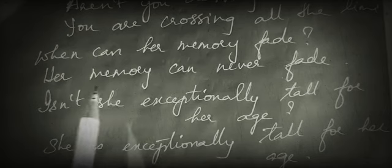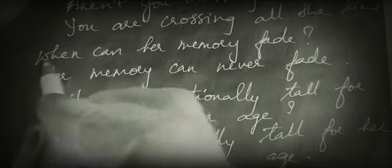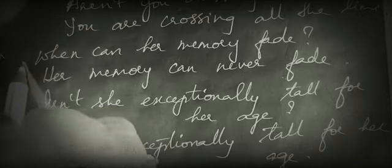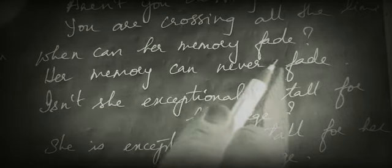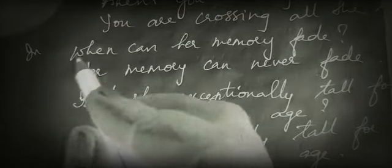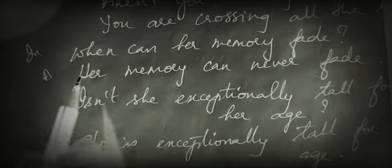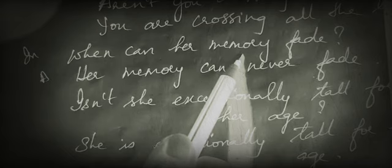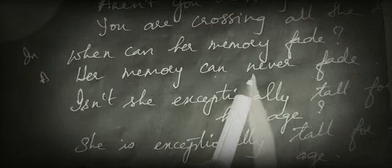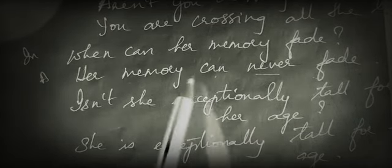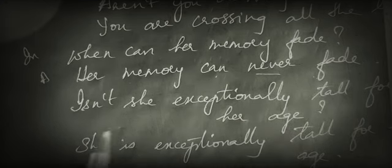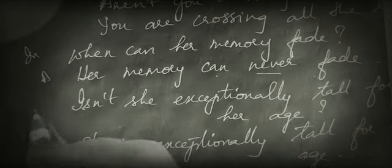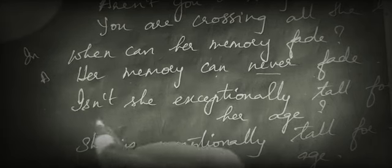Let us see more examples. The interrogative form 'When can her memory fade?' is changed to the assertive 'Her memory can never fade.' Notice the usage of 'can never fade.' Next, 'Isn't she exceptionally tall for her age?' is in negative interrogative form.